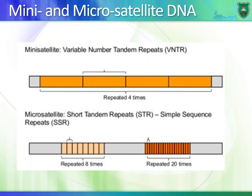Mini and micro-satellite DNA sequences are highly repeated but differ in size. Mini-satellites are also known as variable-number tandem repeats, VNTRs, consisting of about 20 base pair sequences repeated several times in tandem. Micro-satellites are repeats that consist of about 2 to 10 base pairs and can also be repeated several times.